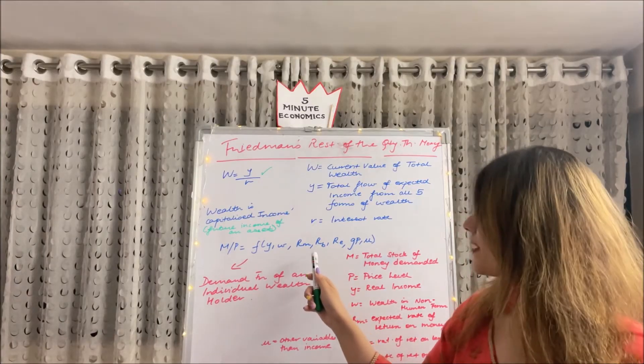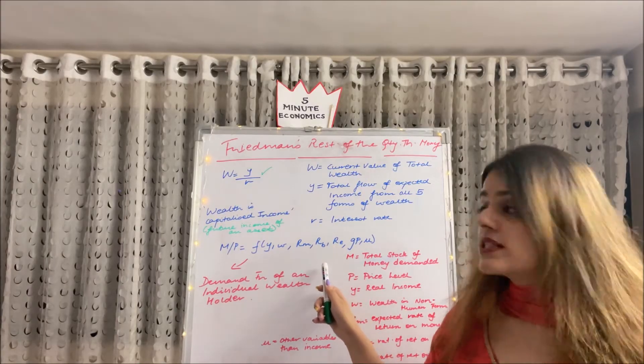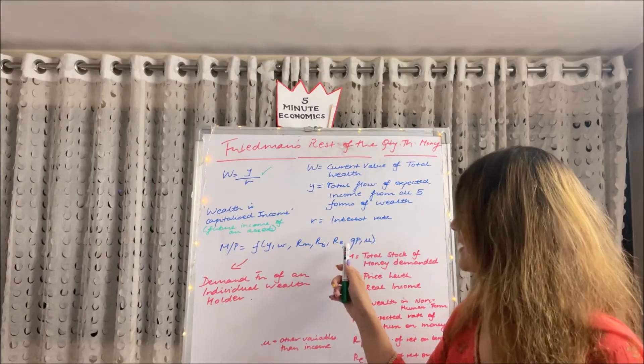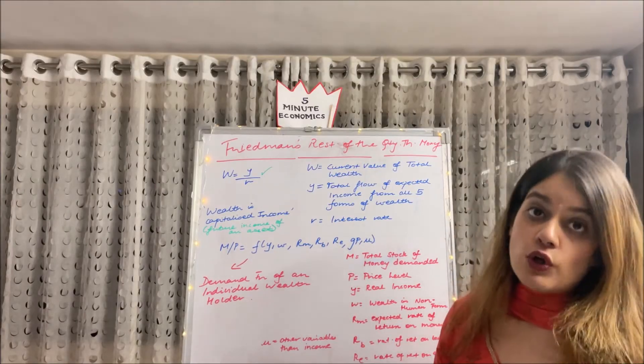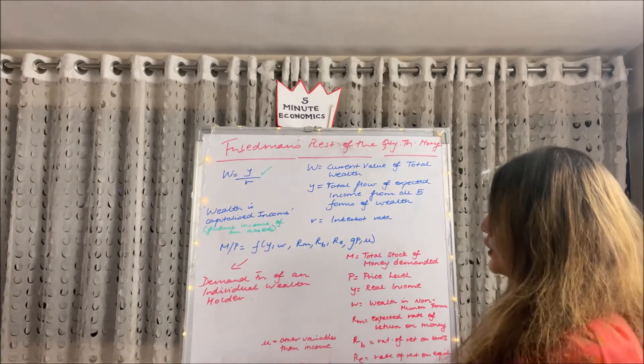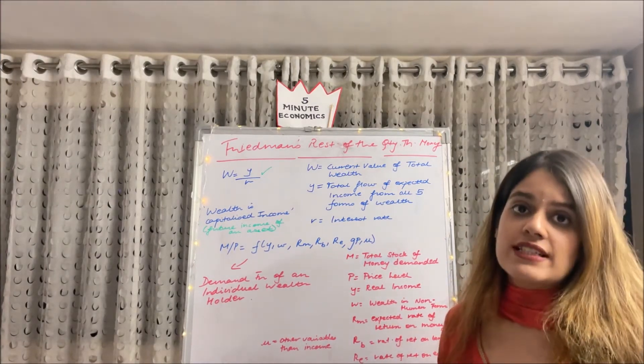RM stands for expected rate of return on money. RB stands for expected rate of return on bonds. RE stands for expected rate of return on equity. And GP, G stands for goods, the change of prices of goods. And lastly U is any other variable apart from income which affects the demand for money.